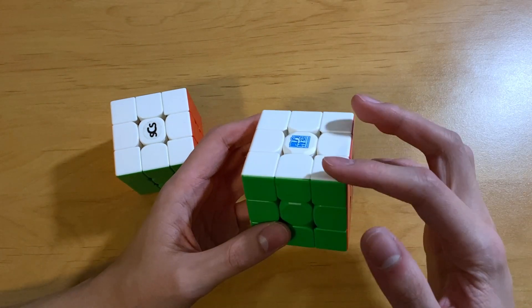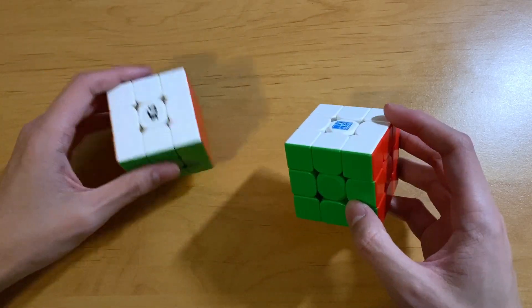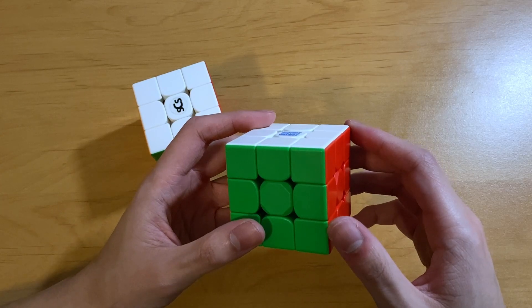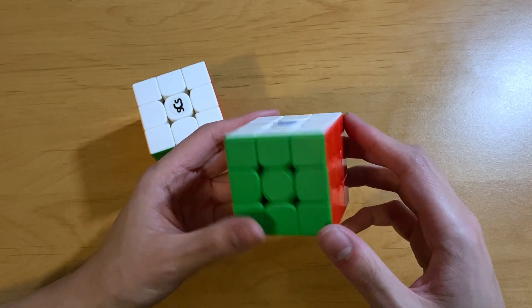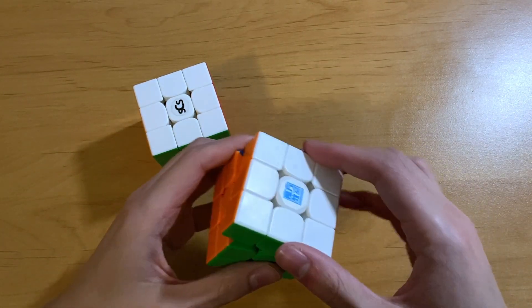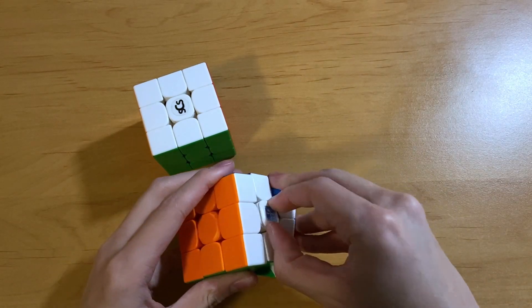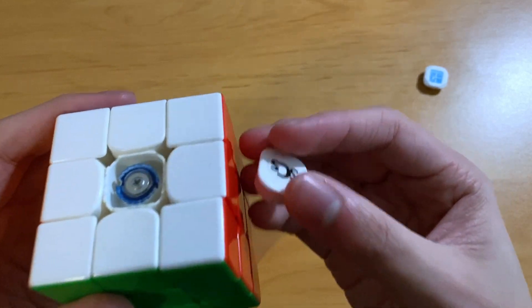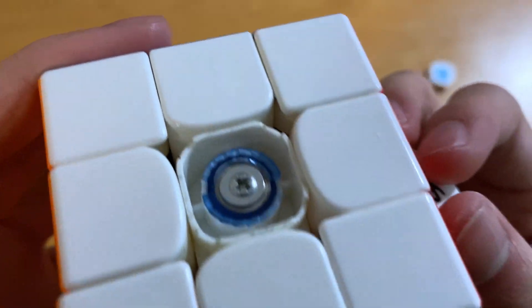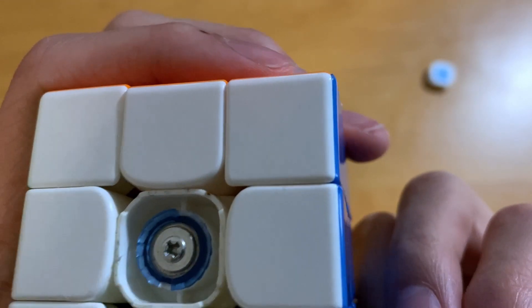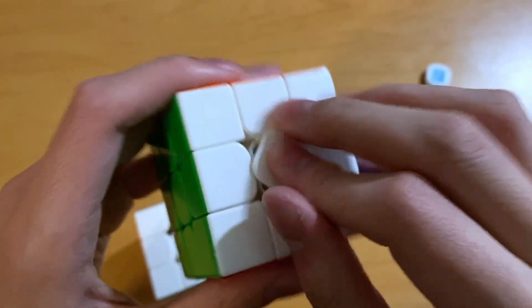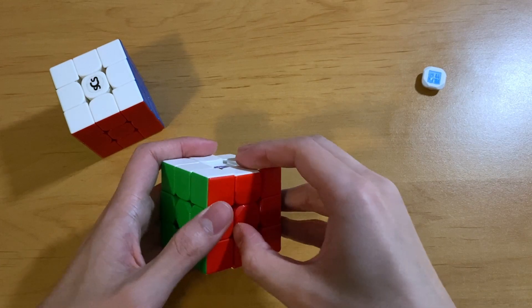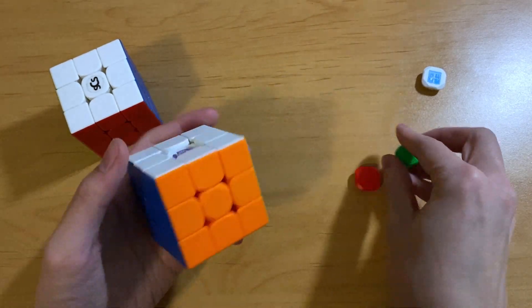All right, now I'm gonna try setting up the Super RS3M to feel more like my RS3M 21, because right now it doesn't feel great and it definitely needs a lot of setup. So I'm gonna start by making the spring compressions the same. Right now my RS3M 2021 is set to the second loosest setting, and right now the Super RS3M is on the lowest setting, so I'm just gonna increase every side by one click.